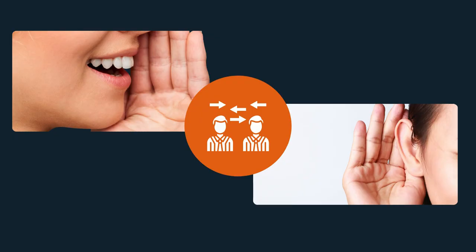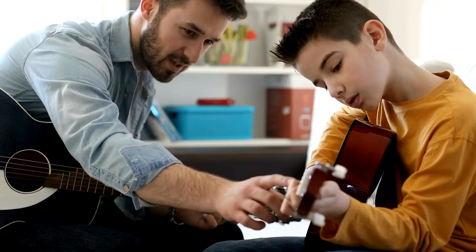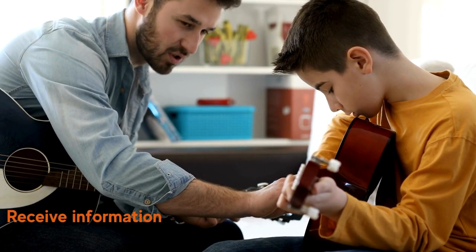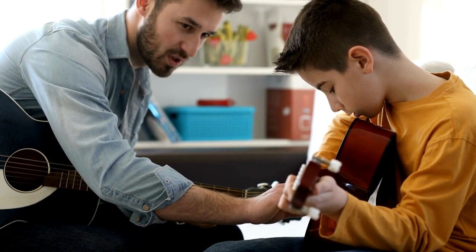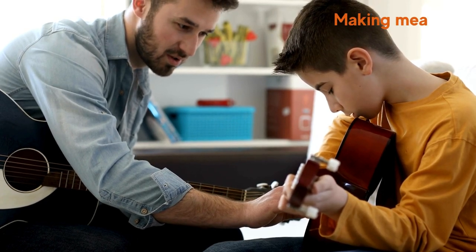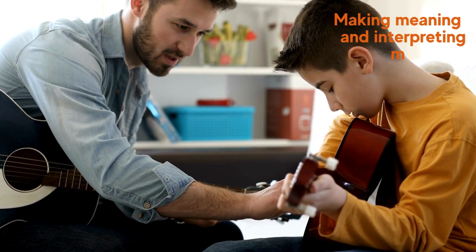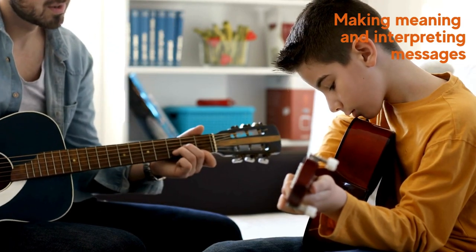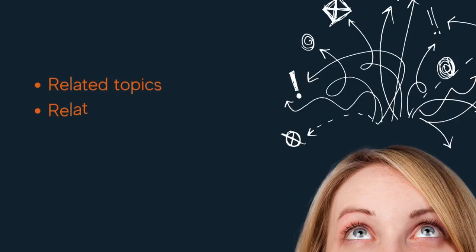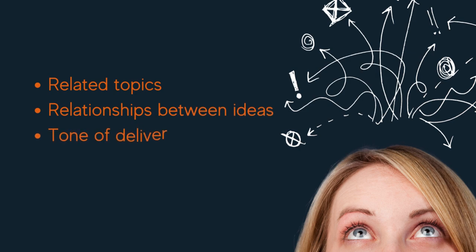Communication is not just about outgoing information — it also includes receiving and interpreting information, such as understanding what the message is about, identifying what topics it relates to, any relationships between ideas, and the way that it is being delivered, such as with anger or an excited tone.